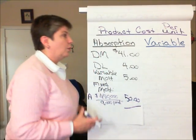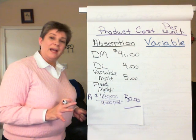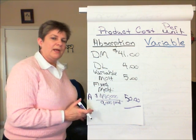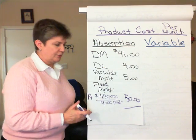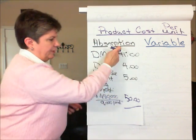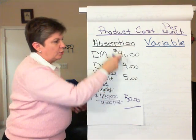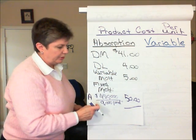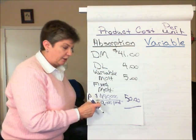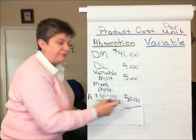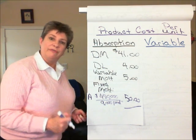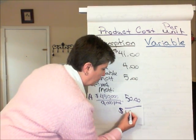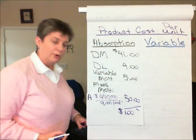So in Scenario A, under absorption costing, our full product cost is the total of the variable costs — $41, $4, and $5, totaling $50 — plus $50 per unit for fixed overhead, for a total of $100 per unit.